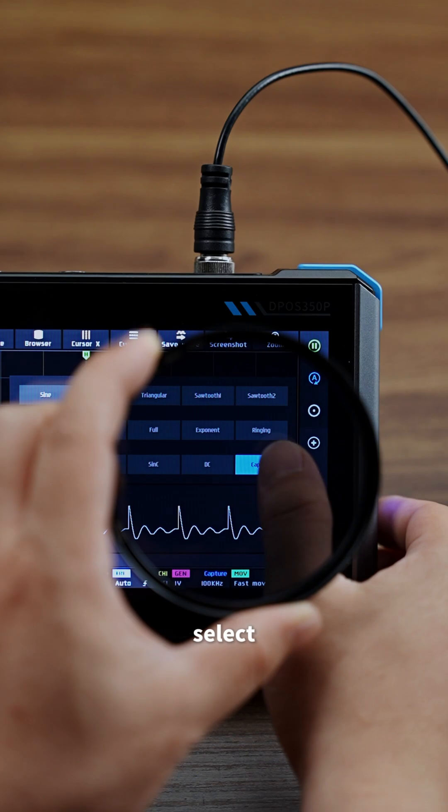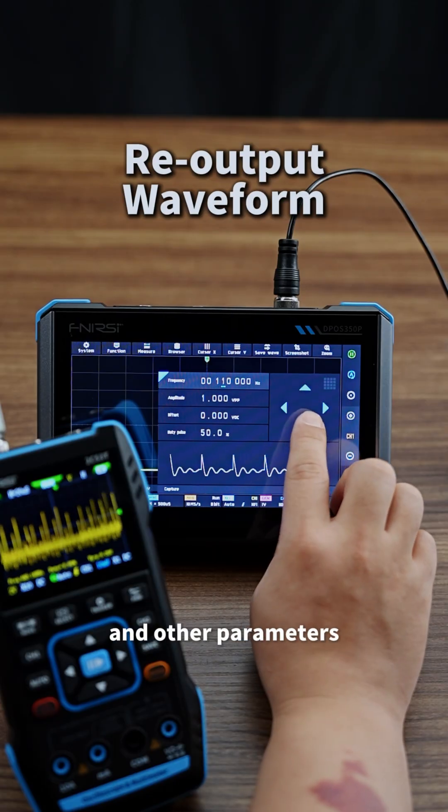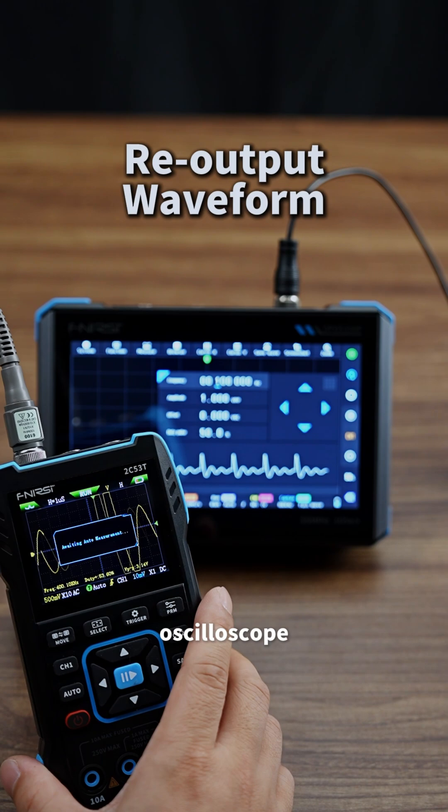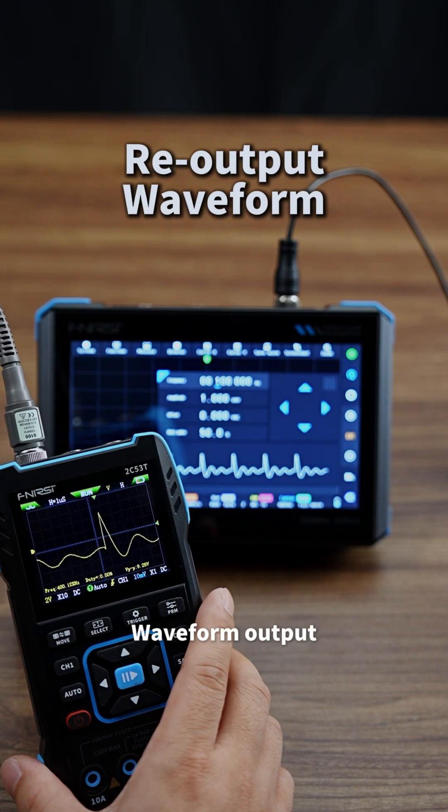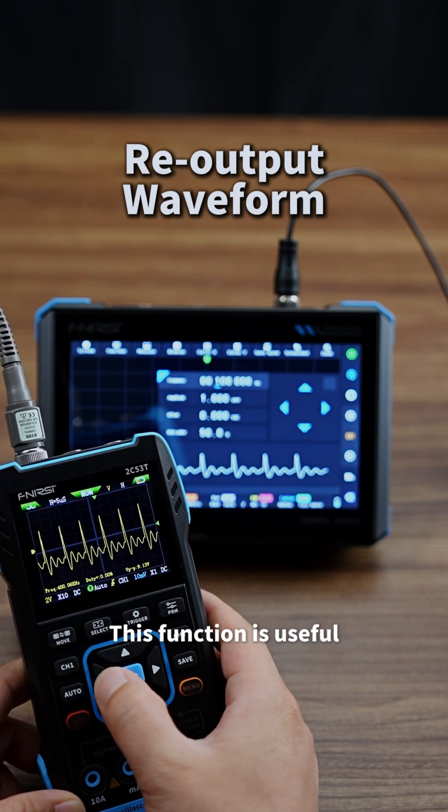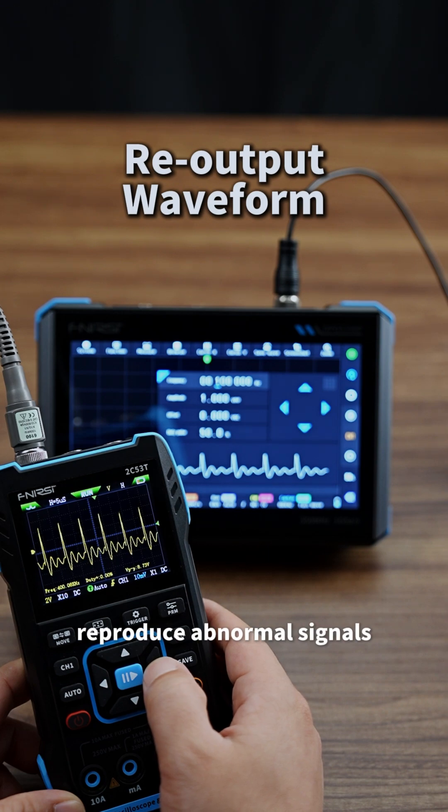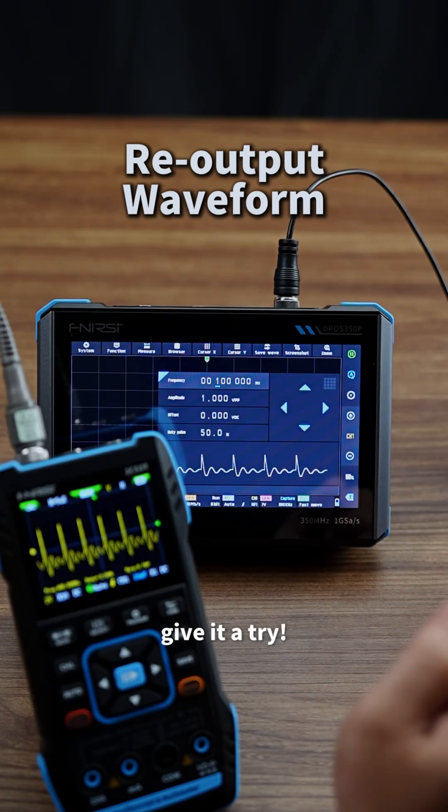Tap Waveform, select Cropped Output. Adjust Frequency and other parameters. On the other oscilloscope, press the Auto key. Waveform Output is complete. This function is useful when you need to reproduce abnormal signals for further analysis. If you're interested, give it a try.